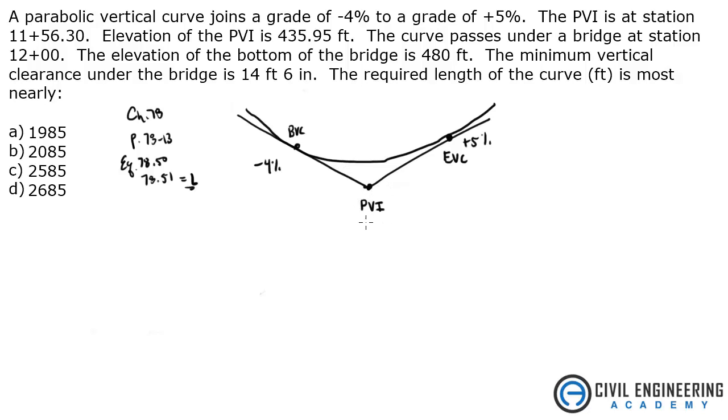Here's where these two intersections meet, PVI. This elevation is 435.95, and the station is 11 plus 56.30. There is a bridge somewhere in between here at station 12 plus 00. The bottom of this bridge is at 480 feet, and we have to have in between here 14 and a half feet, 14 foot 6 inches.